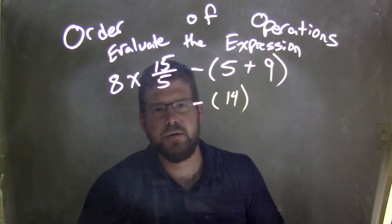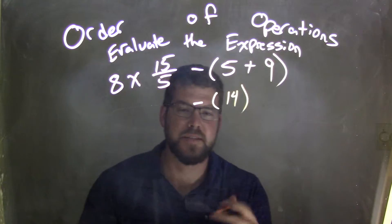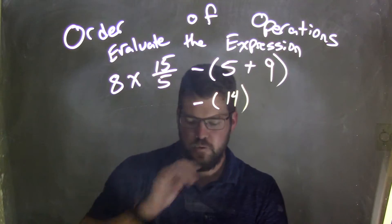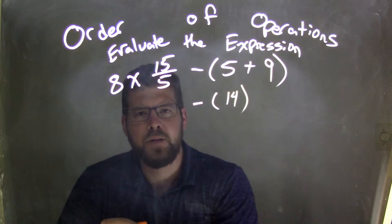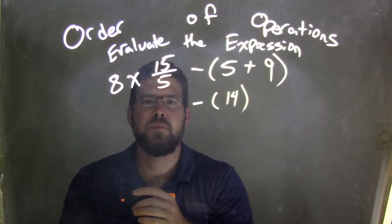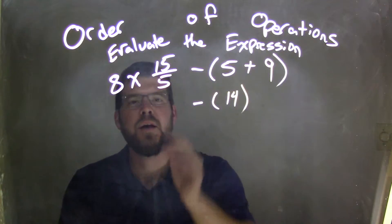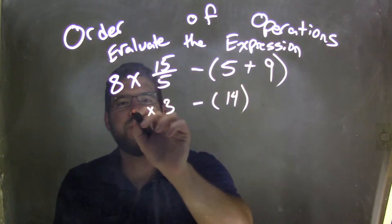Now, if you want to save a step here, sometimes I like to combine steps. I see that 15 divided by 5, the fraction there, that comes out to be 3. So I can put a 3 down here, and I'm going to write it times 8.